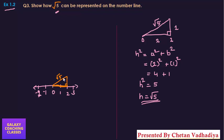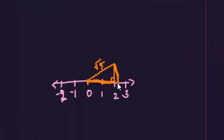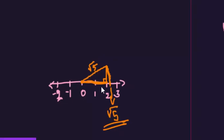Now you have to measure this with the help of a compass. Put your compass point here, pencil here, and draw an arc. Where this arc intersects the number line, that point will be √5. Did you get this?